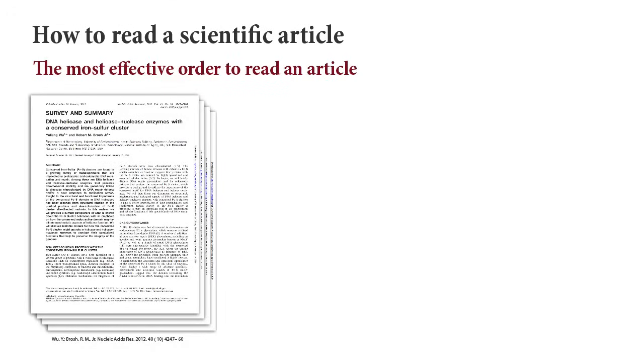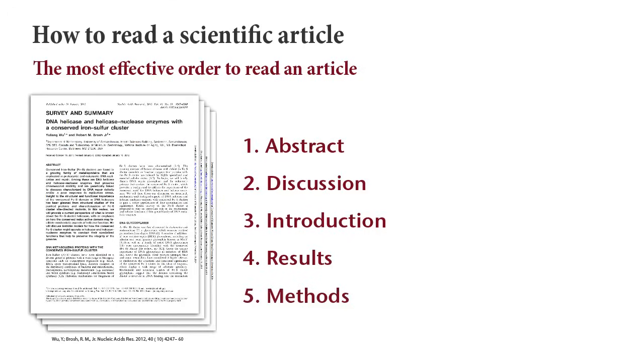The most effective way to read an article is in this order: Abstract, discussion, introduction, results, and methods. By going through articles in this order, you'll be able to quickly find the information you need to determine if the article will be useful.